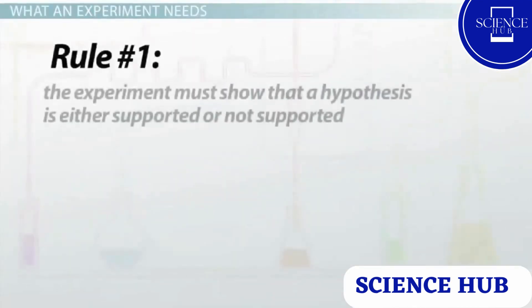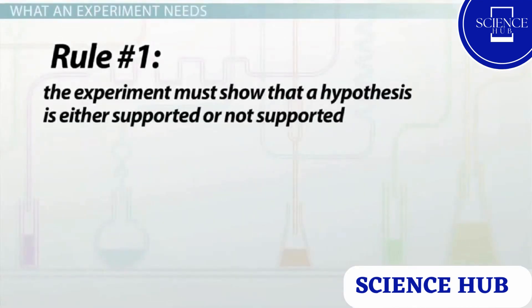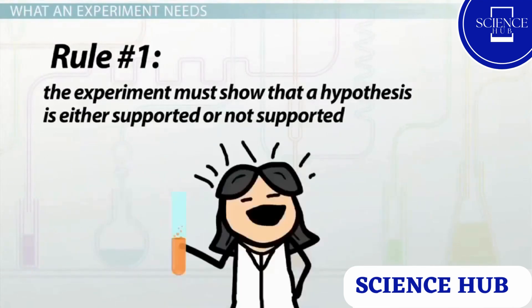Rule number one. The experiment must show that a hypothesis is either supported or not supported. In science, we try to avoid using terms like right and wrong, and we don't say that hypotheses are proven or disproven. A single experiment is not enough to prove anything with 100% certainty.